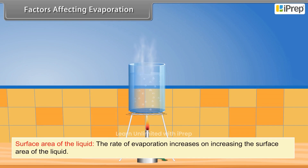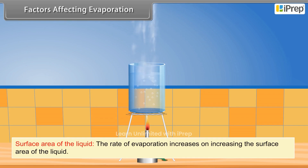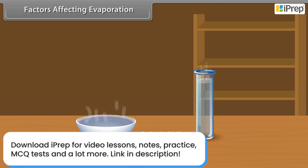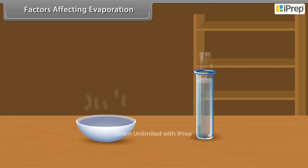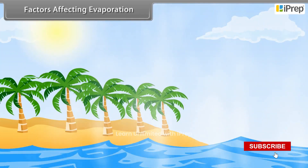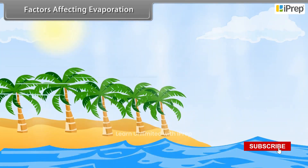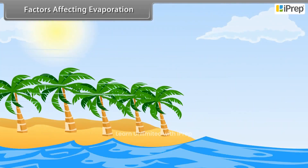Surface area of the liquid: The rate of evaporation increases on increasing the surface area of the liquid. For example, if the same liquid is kept in a test tube and in a china dish, then the liquid kept in the china dish evaporates more rapidly. Wind speed: The rate of evaporation of liquids increases with increasing wind speed.